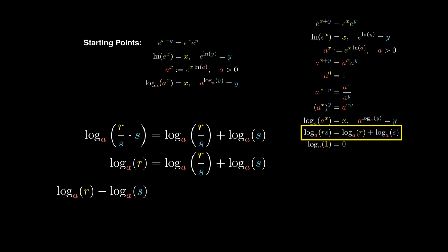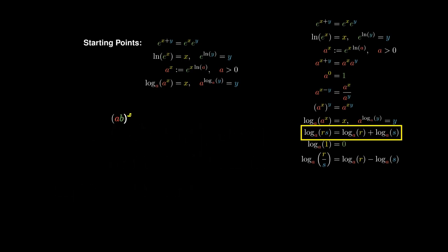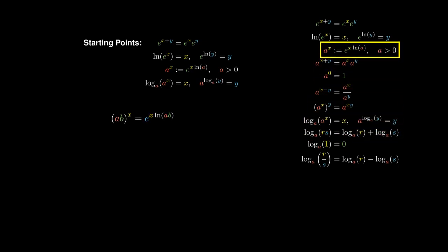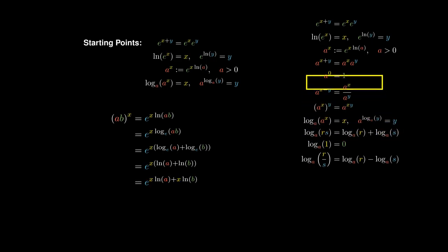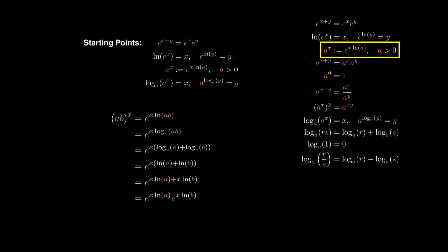Now consider the expression a times b, all to the x. Since this is an exponential with base ab, we can rewrite it in terms of the natural exponential and the natural logarithm. The natural logarithm can be thought of as the logarithm with base e, and the logarithm of a product is equal to a sum of two logarithms. Logarithm base e can be thought of as the natural logarithm. We can distribute the x into the sum via algebra, and since exponentials convert addition into multiplication, this simplifies to a product of two exponentials.